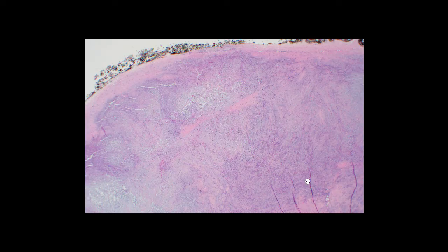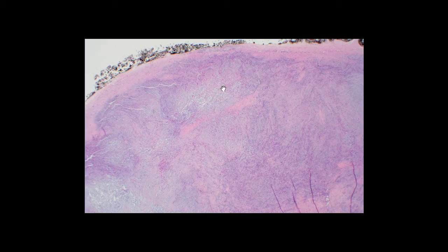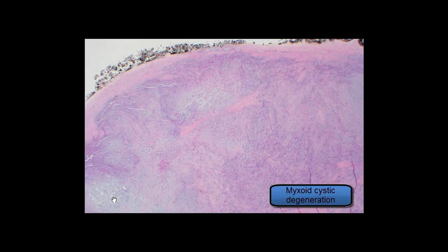From low power, nodular fasciitis usually has a heterogeneous appearance, with some areas being more hypercellular and more fibrous in the background, and other areas being more hypocellular with more of a myxoid background. One of the most useful diagnostic clues, even from 2X magnification, is the presence of these small pockets of myxoid or mucinous cystic degeneration that you can see.